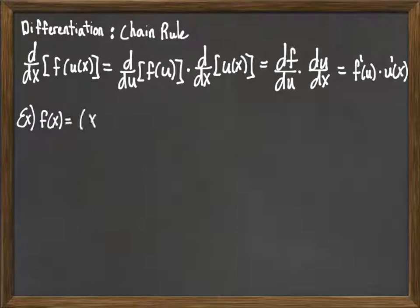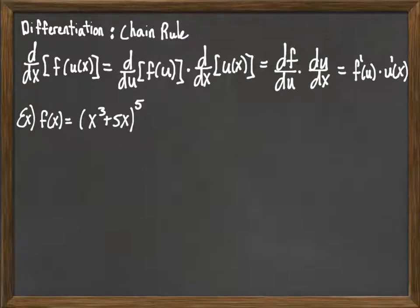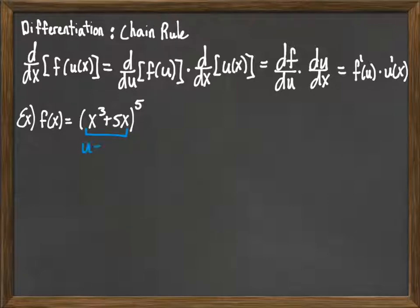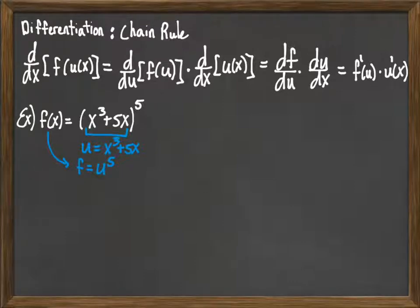So let's consider an example. Here we have a prime example of a composite function: f of x is equal to x cubed plus 5x, all raised to the fifth power. We first spot this as a composite function because we have one expression inside of another operation — the polynomial x cubed plus 5x inside the fifth power operation. So we define that as our u, and then f of u equals u to the fifth.